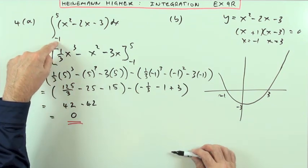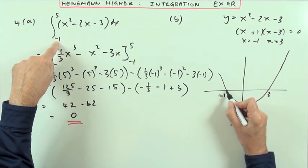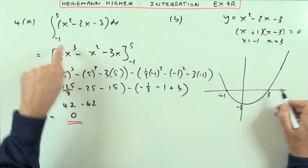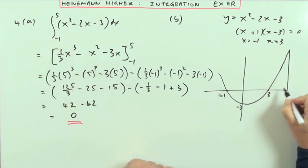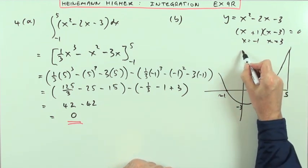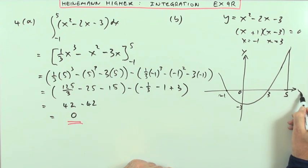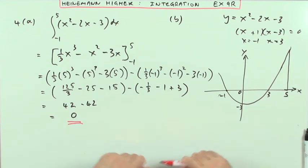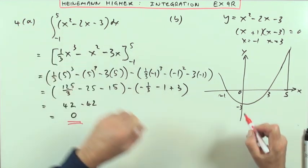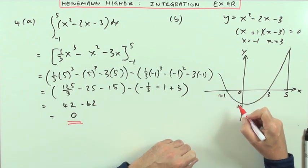I'm evaluating this from negative 1, which is this point on the x-axis, through the 3 until I get to 5. So if I was interpreting this as an area, some of it's going to cancel out, because the integral just evaluates it as it goes.